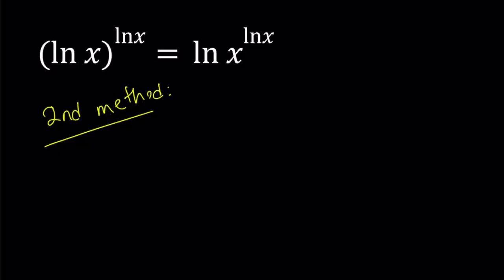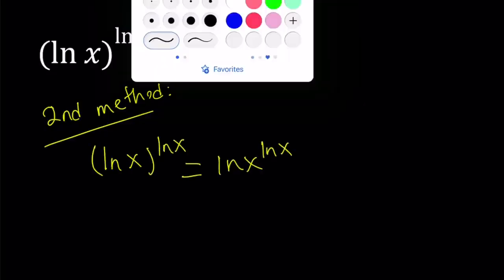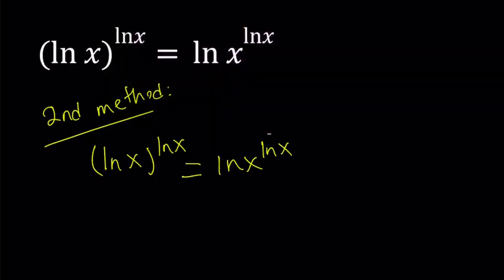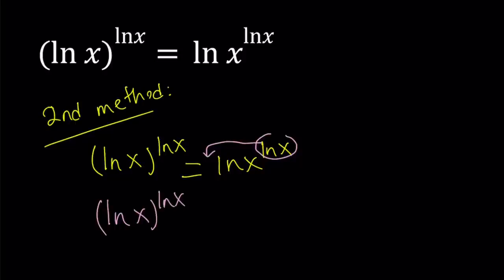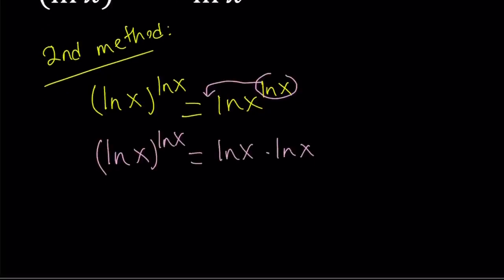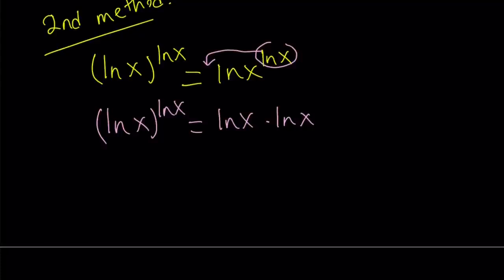My second method basically involves using the properties of logs. On the right hand side, notice that x is an exponent, so by using the properties, we can move this to the front. This becomes ln x times ln x on the right hand side, and then we can write the right hand side as ln x to the second power.